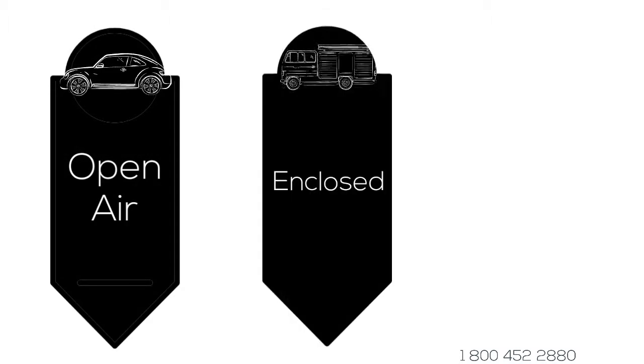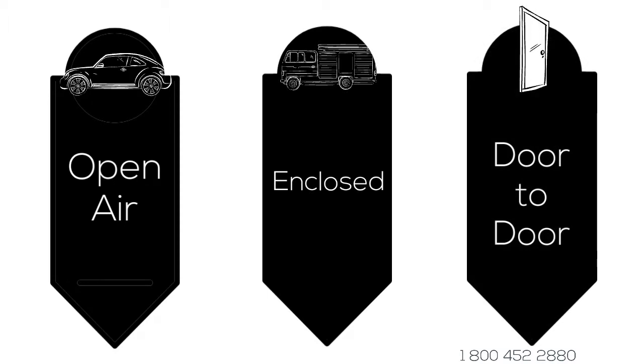Open air, the fastest and cheapest way to transport your vehicle. Enclosed, a little more time to deliver, but protection from all the elements. Door to door, a way to deliver your vehicle right to your doorstep.